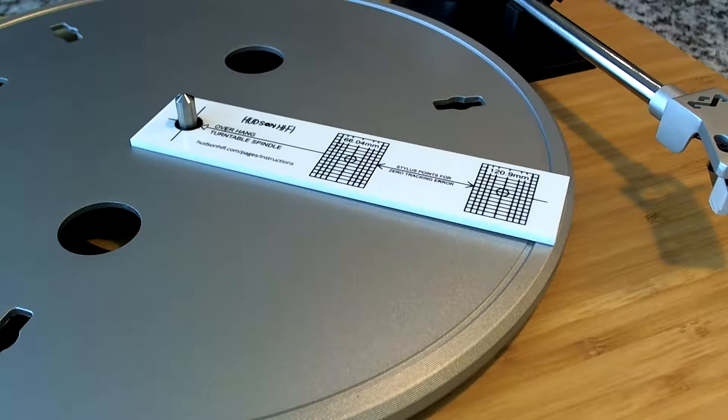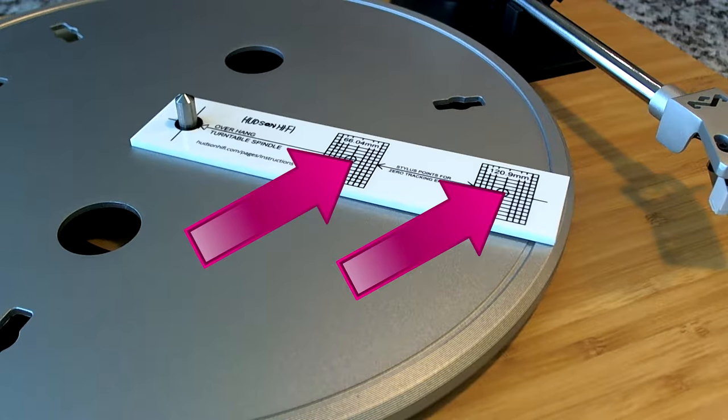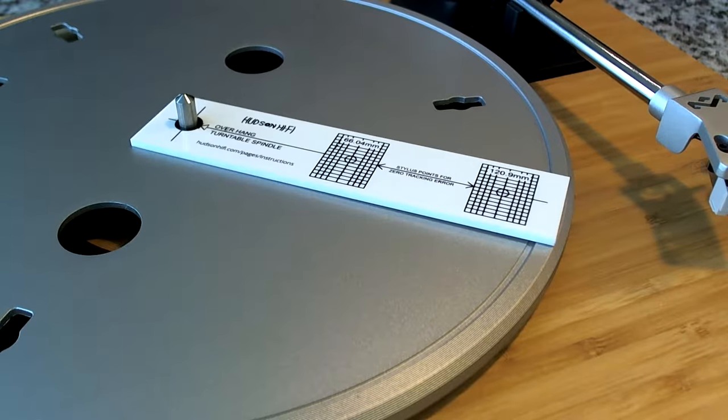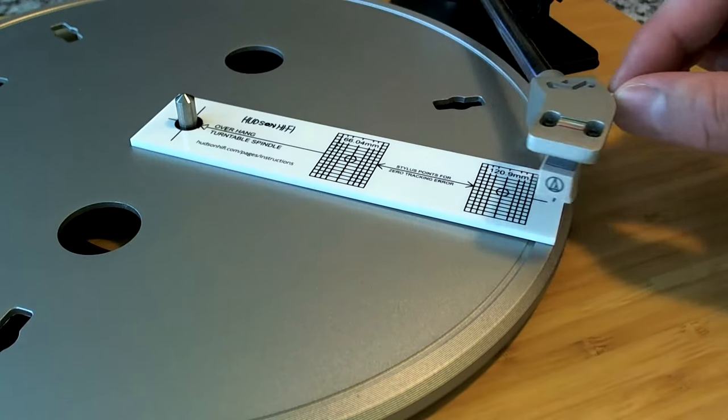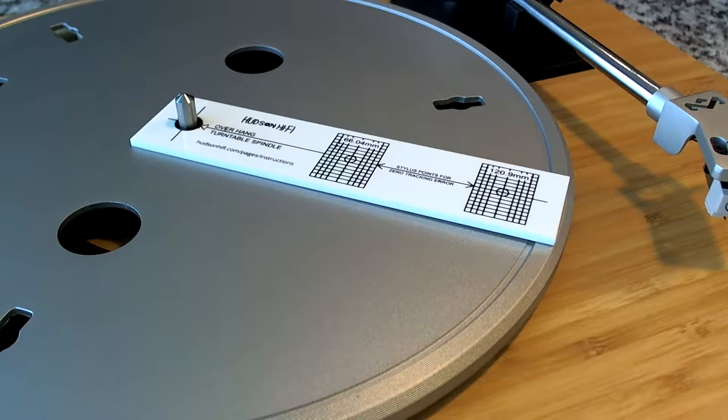As you can see there are two areas on the protractor or the grid and the idea is that by using both of these grids you can align your cartridge in the best way. As you know as a stylus rotates across the record surface and back the stylus and cartridge assembly are never going to track every groove at the exact same angle. Therefore you need to create the best average and that's what this protractor will help us to do.